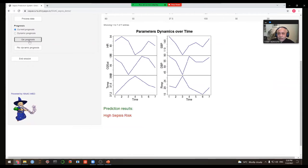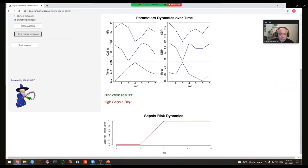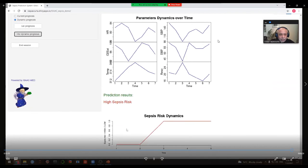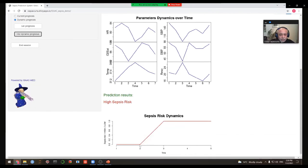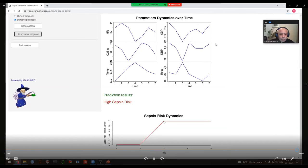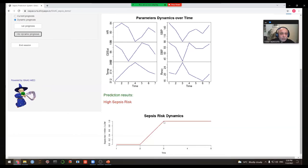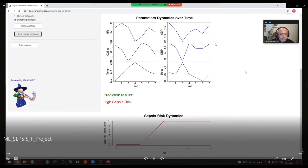We also can look at the dynamics of the sepsis risk during the patient's stay. For this, we need to perform the respective calculation. And finally, we can plot it. We can notice that at the very beginning, the risk was low, zero risk. And in one hour from the admission, the risk became high. And it also means that we need to start antibiotics. And it also means that only in four hours, the regular clinical tools will be able to confirm the diagnosis.